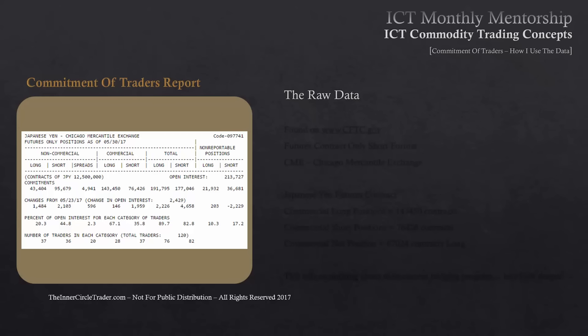The raw data comes by way of a weekly report released by the CFTC, and you can find this at www.cftc.gov. What you want to look for is the futures contract only in the short format. If you do this under the CME — the Chicago Mercantile Exchange — we can find the currencies that trade as comm dolls. One of the comm dolls is the Japanese yen, and this is the most recent short-format Commitment of Traders report for the Japanese yen.